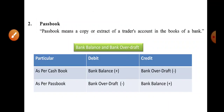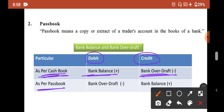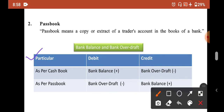So I think this is clear to you. Debit balance as per cash book means positive bank balance. Credit balance as per cash book means bank overdraft. Debit balance as per pass book means bank overdraft, and credit balance as per pass book means positive bank balance. Cash book ka positive balance matlab hota hai debit, negative balance hota hai credit. Pass book ka negative hota hai debit aur positive hota hai credit.